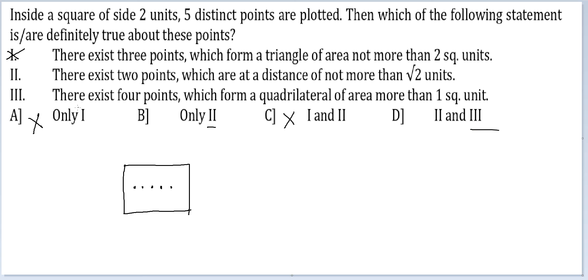So let me just check if the third statement is true. The third statement says, there exist 4 points which form a quadrilateral of area more than 1 square unit. Again, if I took all the 5 points in a single line, there will not be any quadrilateral formed. So this point is also not true.